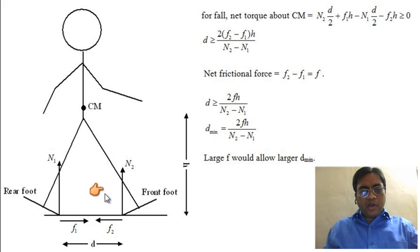Let's consider, talk about center of mass. Due to N2, N2 multiplied by the perpendicular distance and that is D by 2. Due to F1, F1 multiplied by the perpendicular distance, so it is F1H.